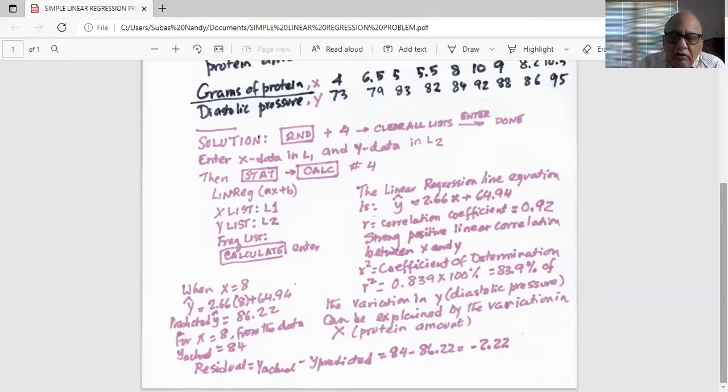If you want to see a plot of X and Y that you have entered in L1 and L2, you can always click the zoom button, which is the third key in that extreme top row, zoom and then 9.